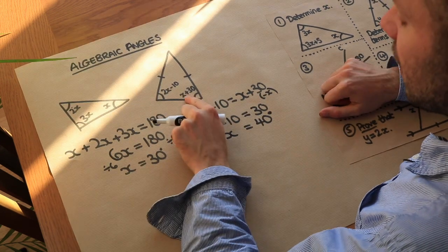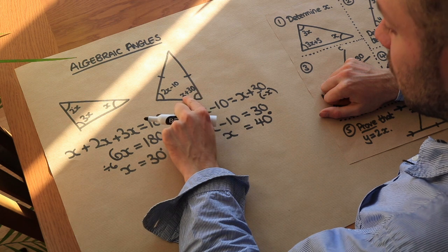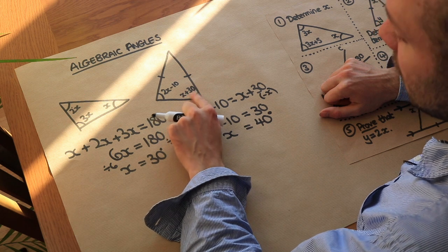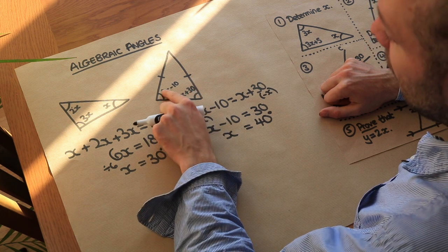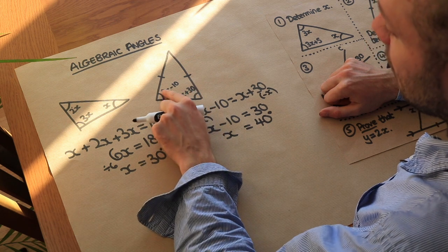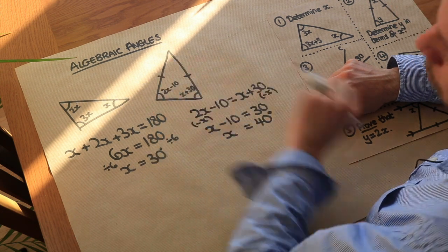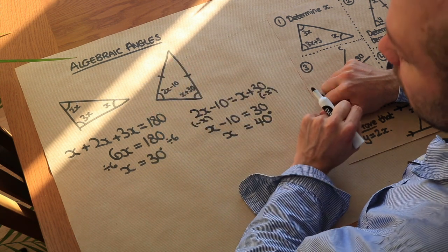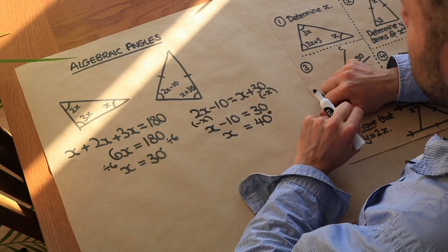That means the angle x plus 30 is 40 plus 30, which is 70. The other base angle is also 70, and then the top angle must be 40 in order for all three angles to add up to 180 degrees.